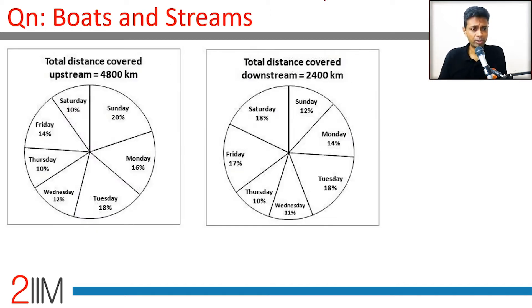Total distance covered upstream is 4800 kilometers. Sunday is 20% of that, Saturday is 10% of that, Monday is 16% of that, with assorted percentages for the remaining days.